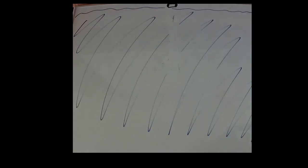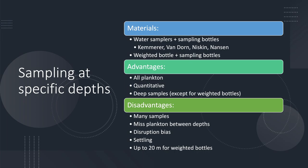Advantages to this method include obtaining even the smallest plankton, getting quantitative data, and being able to sample to deep depths, limited mainly by the length of line available. Disadvantages include needing many samples in order to get a good representation from throughout the water column, or missing plankton between sampling depths.